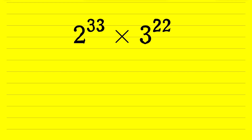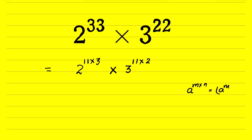Solve 2 raised to the power 33 times 3 raised to the power 22 without a calculator. We can write 2 raised to the power 33 as 2 raised to the power 11 times 3, and 3 raised to the power 22 as 3 raised to the power 11 times 2. There is an identity where a raised to the power m times n can be written as a raised to the power m, whole raised to the power n.